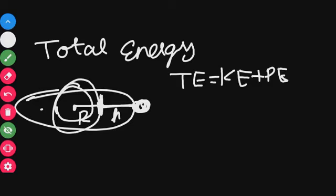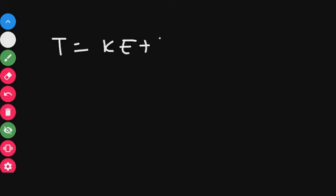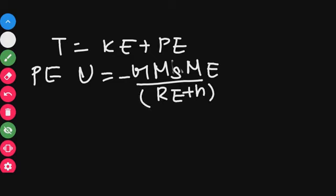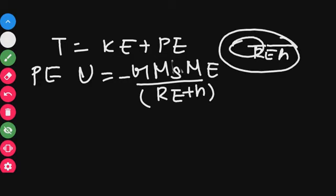The total energy is equal to the sum of kinetic energy and potential energy. The potential energy is U, which is equal to minus G times Me times Ms divided by Re plus h, because the total distance is Re plus h — Re is the radius of the earth and h is the height the satellite is revolving at.